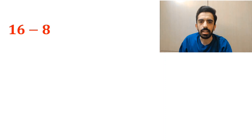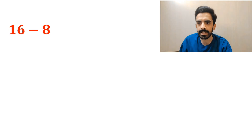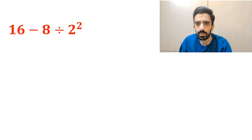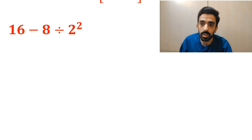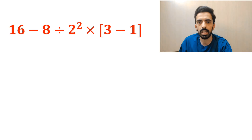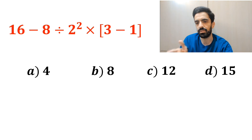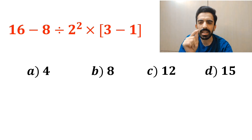As you can see on the screen, in this question we have an expression that says 16 minus 8 divided by 2 squared multiplied by open bracket 3 minus 1 closed bracket. The options for this question are as follows. Which one do you think is the correct answer to this question?